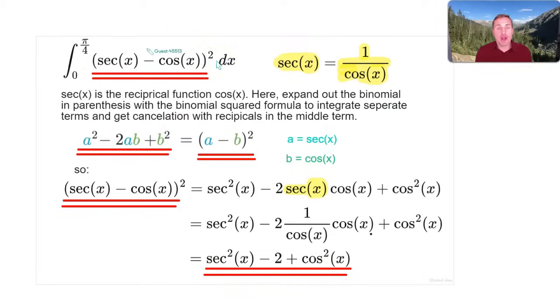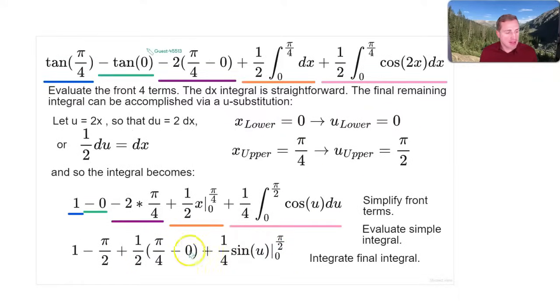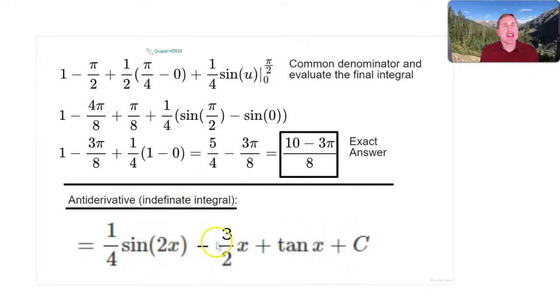Now by the way, if you want the full antiderivative, the full antiderivative is going to be 1/4 sin(2x) - 3/2 x + tan(x) + c. So a couple things. First of all, it's an antiderivative because it's an indefinite integral. If there was no bounds, that's why it has a plus c, because there's an unknown constant of integration. Notice what we would have had is we would have had -2x plus a 1/2 from integrating the sign, from integrating the term here. That's this term right here. You would have gotten a plus 1/2 x.